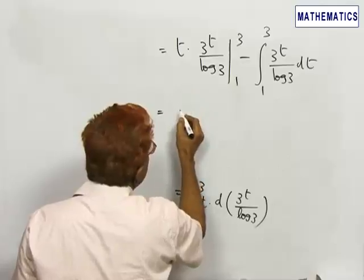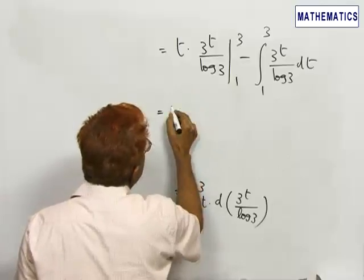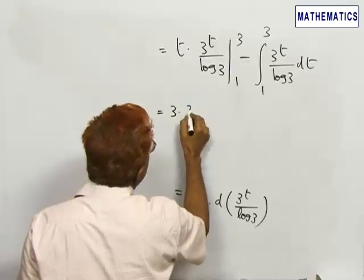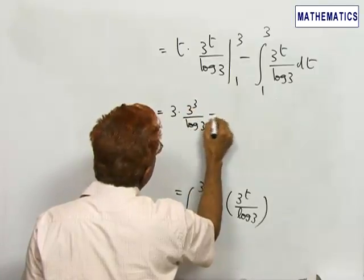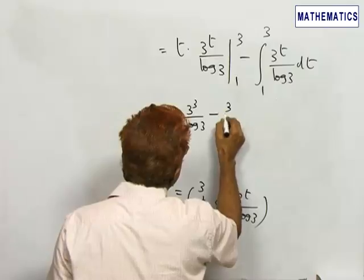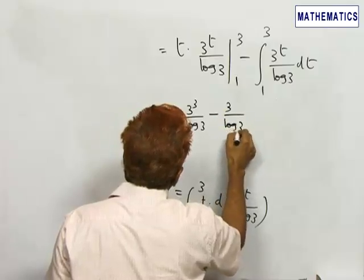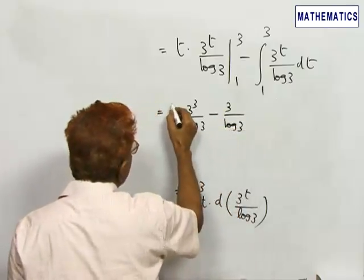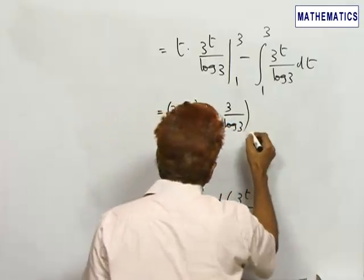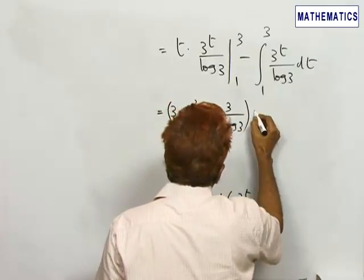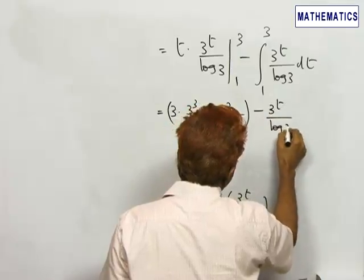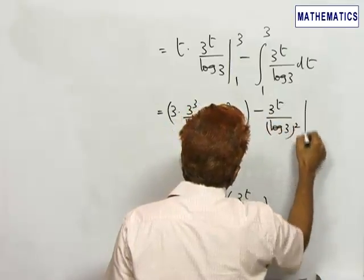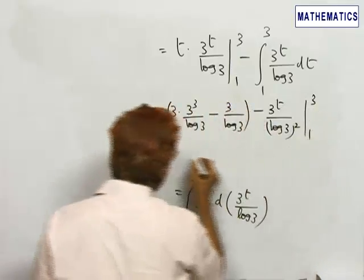Here we substitute the limits. We get 3 into 3 cube by log 3 minus 3 by log 3, minus 3 power t by log 3 the whole square between the limits 1 to 3.